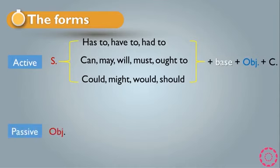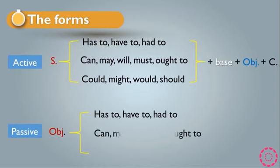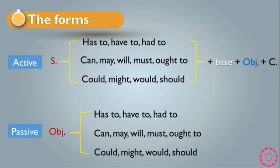In the passive form, the object comes at the beginning, plus the modal verb — has to, have to, had to, can, may, will, must, ought to, could, might, would, or should — followed by 'be', plus the past participle of the verb, and then the complement.